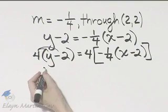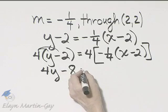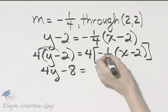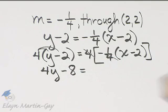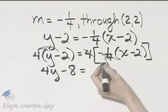The left side, I'll go ahead and use the distributive property. That's 4y minus 4 times 2 is 8, is equal to, now notice these 4s divide out, but we're going to be very careful. I still have negative 1, which I need to distribute.